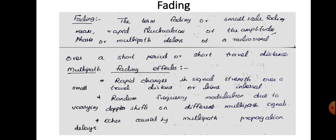Multipath fading effects include rapid changes in the signal strength over a small travel distance or time interval. Random frequency modulation may occur due to fading, caused by varying Doppler shift on different multipath signals. Due to the Doppler shift on different multipath signals, random frequency modulation may occur on the signal transmitted through the channel.